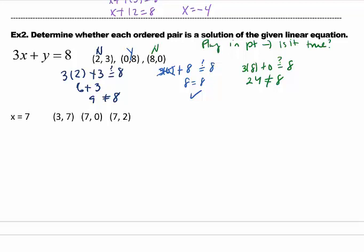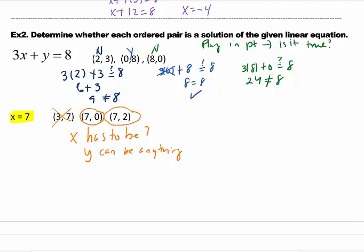My other equation here is x equals 7. Notice it doesn't have an x and a y, which means all this is telling you is that x has to be 7, y can be anything. There are no restrictions. So if x is 7, we're good. So in this one, x is 7, we're good. This one where x is 7, we're good. The first one, not good because the x is not 7.